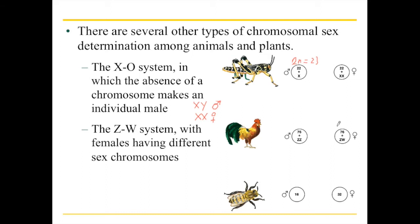The naming ZW is not because the chromosomes look like those letters — remember the XY system was named because the X chromosome looked like the letter X and the Y chromosome looked like the letter Y. They threw that out and just went one over from X and one over from Y. In the ZW system, females have the different sex chromosomes. Unlike in XY where the X chromosome is big and the Y is small, in ZW the Z chromosome is small and the W chromosome is big.